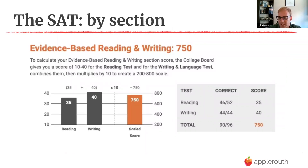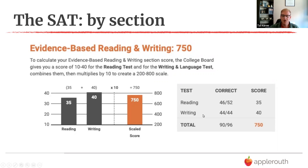Breaking down the EBRW — the reading and writing score — they grade it out of 40 for reading and 40 for writing, then add those two numbers together and add a zero at the end. The maximum score on writing is 40. On reading, missing six questions cost us 50 points. Because all SATs are graded on a curve — standardized against everyone else nationally taking the same test — at the top of the curve every question is basically worth 10 points.